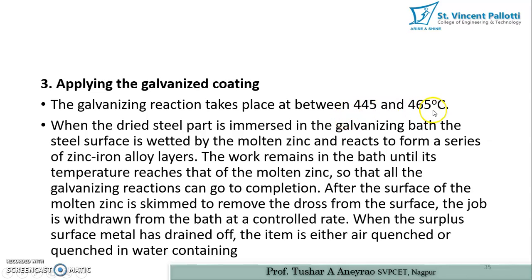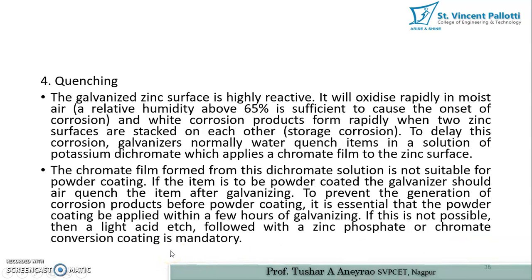The galvanizing reaction takes place between 445 to 465°C. When the dried steel part is immersed in the galvanizing bath, the steel surface is wetted by the molten zinc and reacts to form a series of zinc-iron alloy layers. The work remains in the bath until the temperature of the steel reaches that of the molten zinc so all galvanizing reactions can go to completion. After the surface of the molten zinc is skimmed to remove impurities, the job is withdrawn from the bath at a controlled rate.